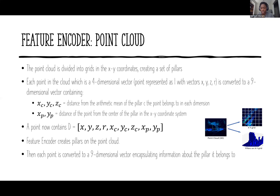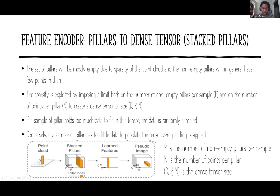The feature encoder creates pillars on the point cloud, and each point is converted to a nine-dimensional vector encapsulating information about the pillar it belongs to. The point cloud from 3D is converted into an XY grid, and the pillars on the XY grid become vertical columns of nine-dimensional vectors. After the pillars are created, they are converted to a dense tensor of stacked pillars. The set of pillars will be mostly empty due to sparsity of the point cloud, and non-empty pillars will generally have few points.